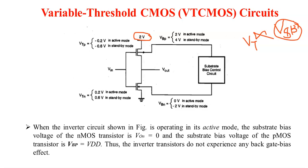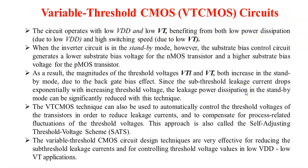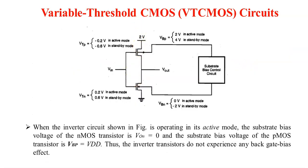In active mode, the substrate bias voltage of the NMOS transistor VBN is equal to 0, and the substrate voltage for PMOS is equal to VDD, that is 2V. In standby mode, the substrate bias control sets the lowest substrate bias voltage for NMOS and the highest substrate bias voltage for PMOS. So in standby mode, VBP is equal to 4V and VBN is equal to 2V.